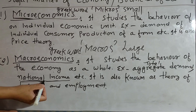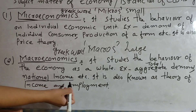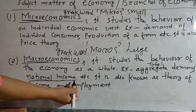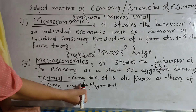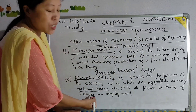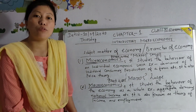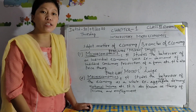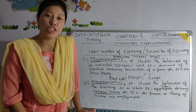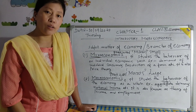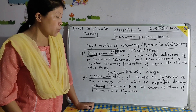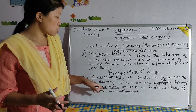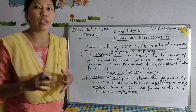National income comes from three sectors: the primary sector, secondary sector, and tertiary sector. Primary sectors include fishery, mining, agriculture, and forestry. Secondary sectors include manufacturing industries. Tertiary sectors include telecommunications, tourism, and banking. So income comes from these three sectors — that is your national income, meaning total income of the country.